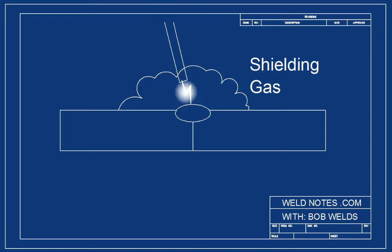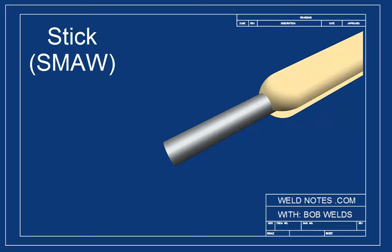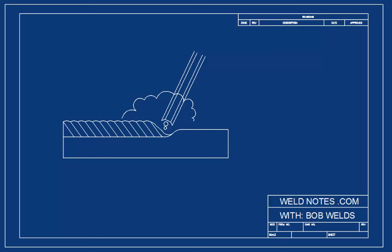In stick welding the shielding gas comes from a covering that is all around the electrode. When this covering gets hot it creates a cloud of shielding gas that protects the weld from contaminants. It also leaves behind a covering called slag that continues to protect the weld while it cools. When the metal cools this layer of slag has to be removed.